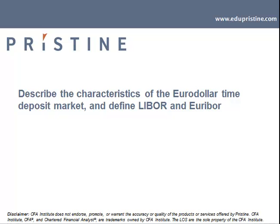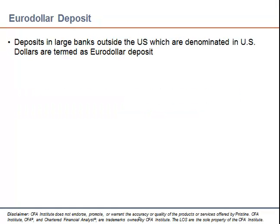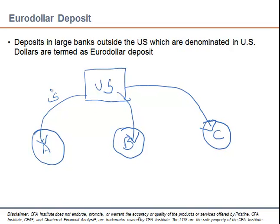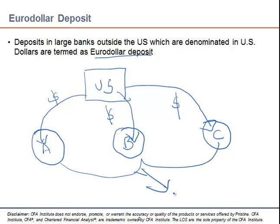In this session we will understand what a euro dollar deposit is, and what LIBOR and EURIBOR mean. Euro dollar deposits refers to dollar denominated deposits outside of the US. If these are banks outside the US — say banks B and C — when dollars are deposited there, those deposits are called euro dollar deposits.